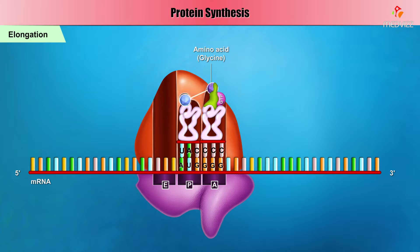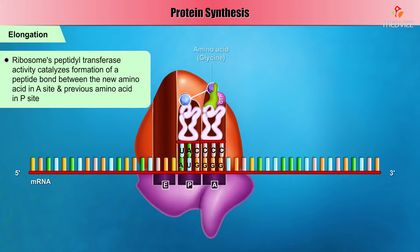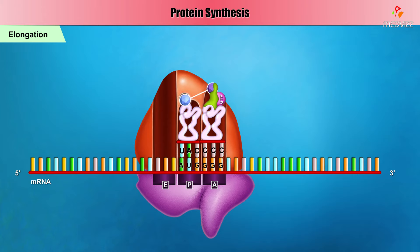In the second step, the ribosome's peptidotransferase activity catalyzes the formation of a peptide bond between the new amino acid in the A site and the previous amino acid in the P site. Simultaneously, GTP is hydrolyzed and the resulting EF-TU-GDP is expelled.